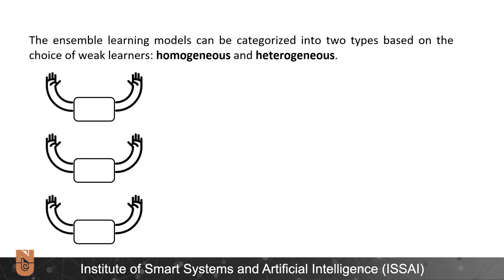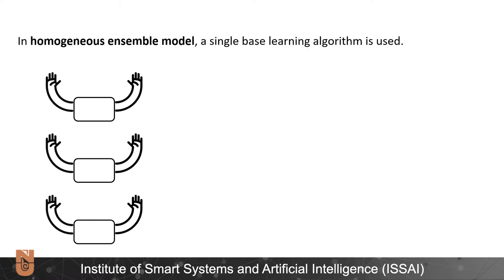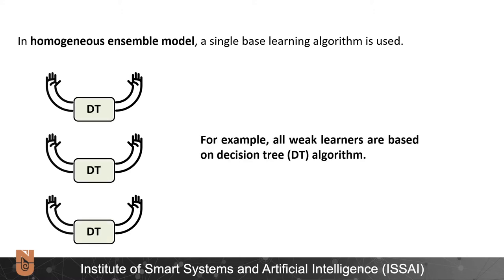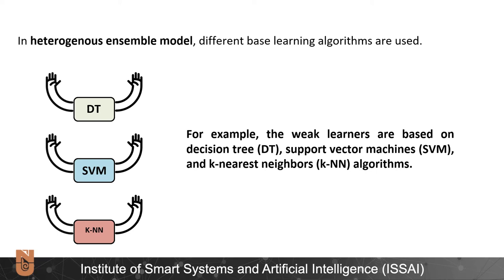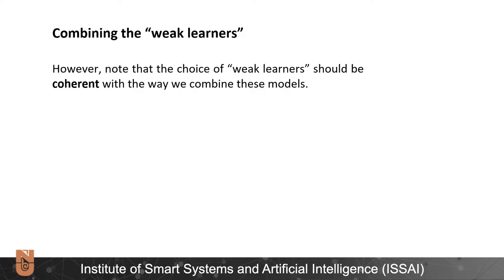The ensemble learning models can be categorized into two types based on the choice of weak learners – homogeneous and heterogeneous. In a homogeneous ensemble model, a single base learning algorithm is used. For example, all weak learners are based on the decision tree algorithm. On the other hand, in a heterogeneous ensemble model, different base learning algorithms are used. For example, the weak learners are based on decision tree, support vector machines, and k-nearest neighbors algorithms.